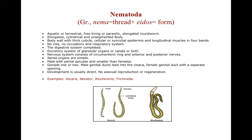In Nematoda there are no cilia, no circulatory system, and no respiratory system, but the digestive system is complete. The excretory system consists of glandular organs or canals, or it may be of both types. The nervous system comprises a circumpharyngeal ring and anterior and posterior nerves. Sense organs are present but they are simple.